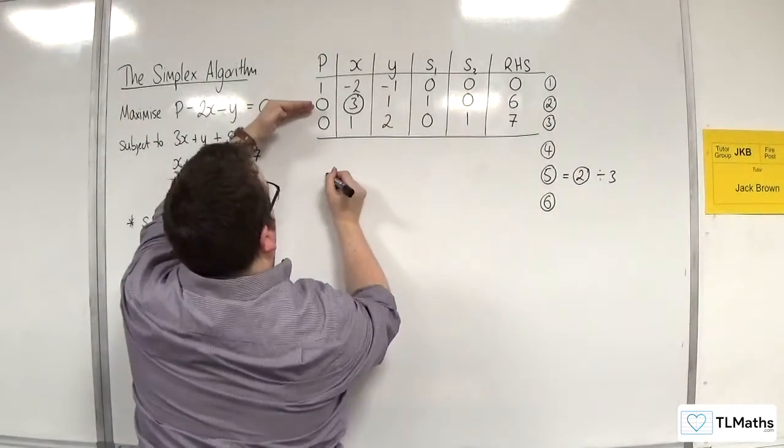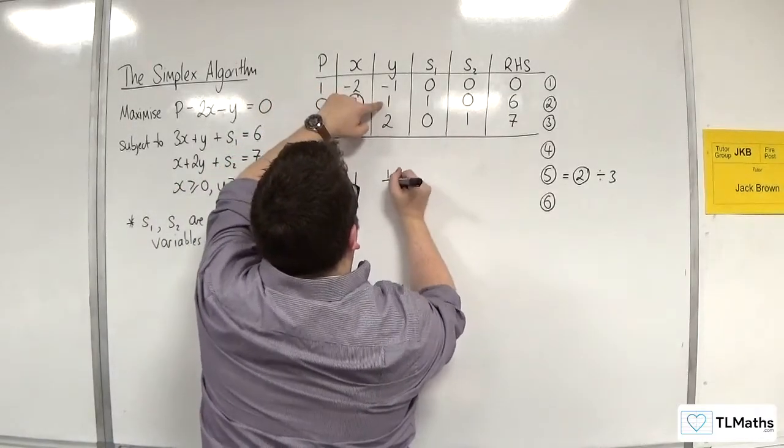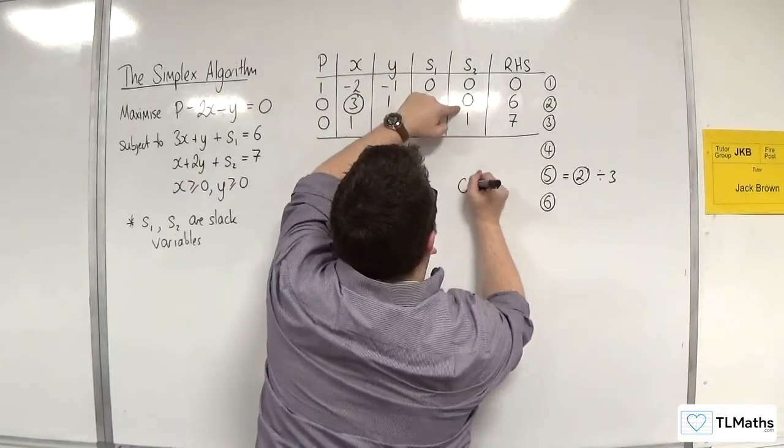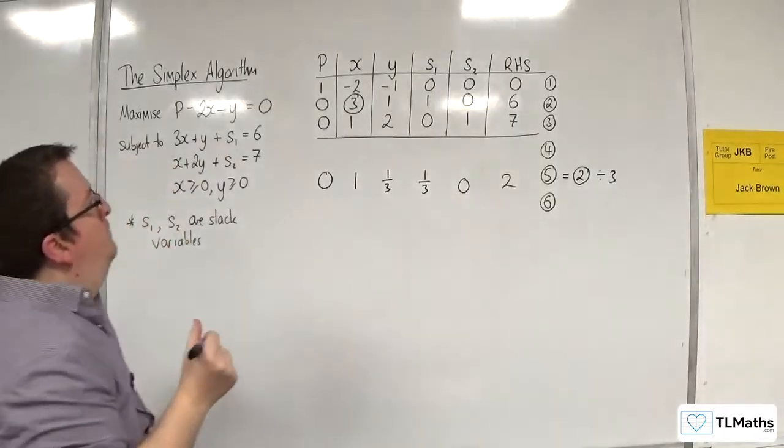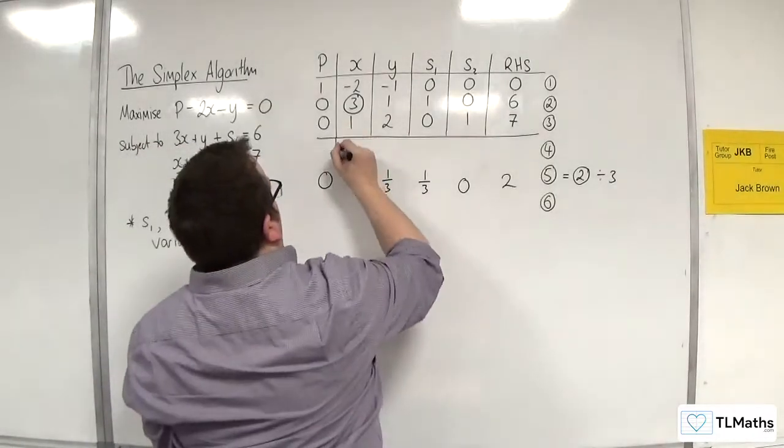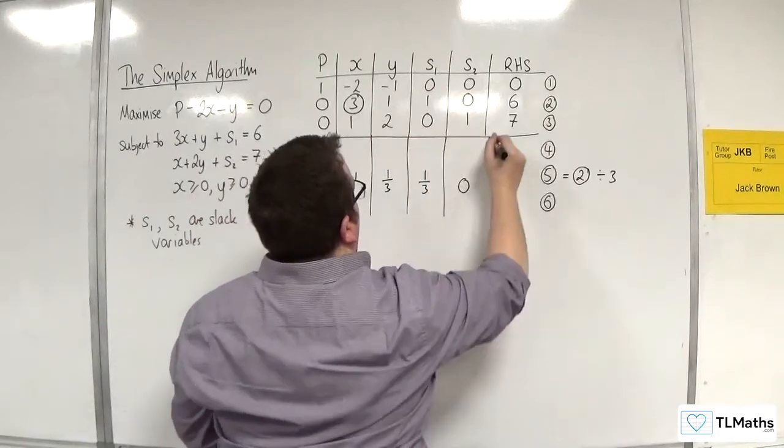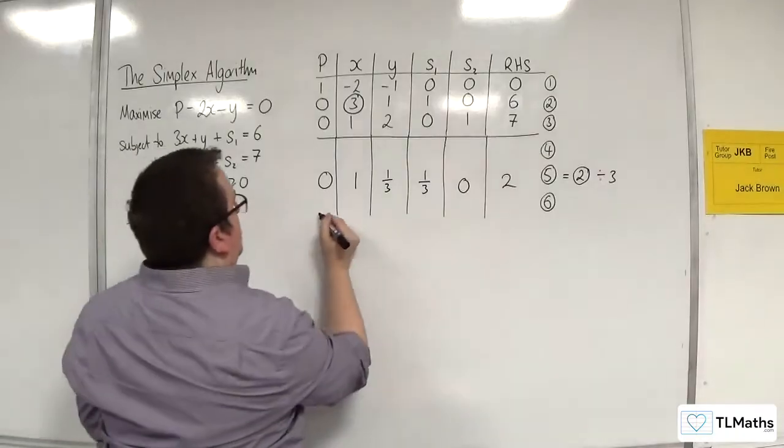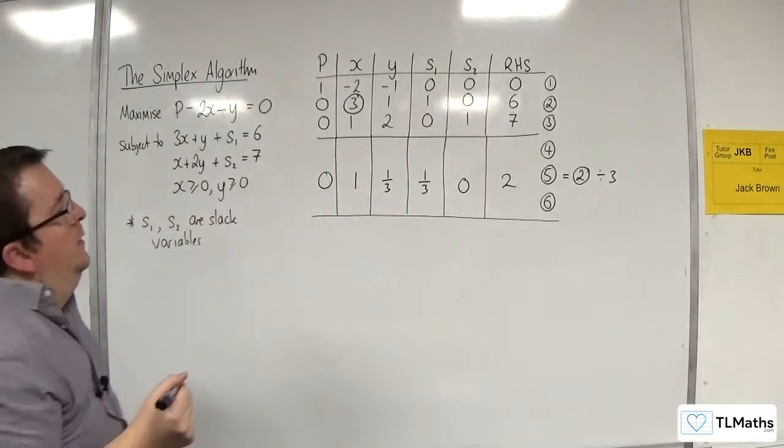So we get 0, 1, 1 third, 1 third, 0, 2. So let's continue that down.